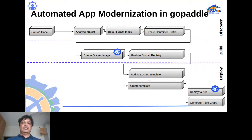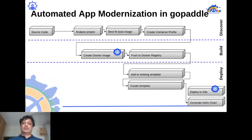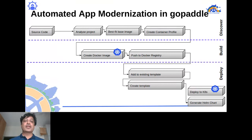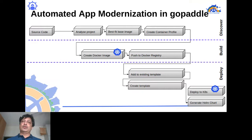Once the image is built, it's pushed to a Docker registry — supporting public, private, on-prem, and SaaS registries. Then a service group is created in Kubernetes and added to a deployment template. Once the template is ready, you can deploy directly to Kubernetes or generate a Helm chart that can be downloaded and deployed anywhere. This entire modernization happens through a few clicks or a single command line.